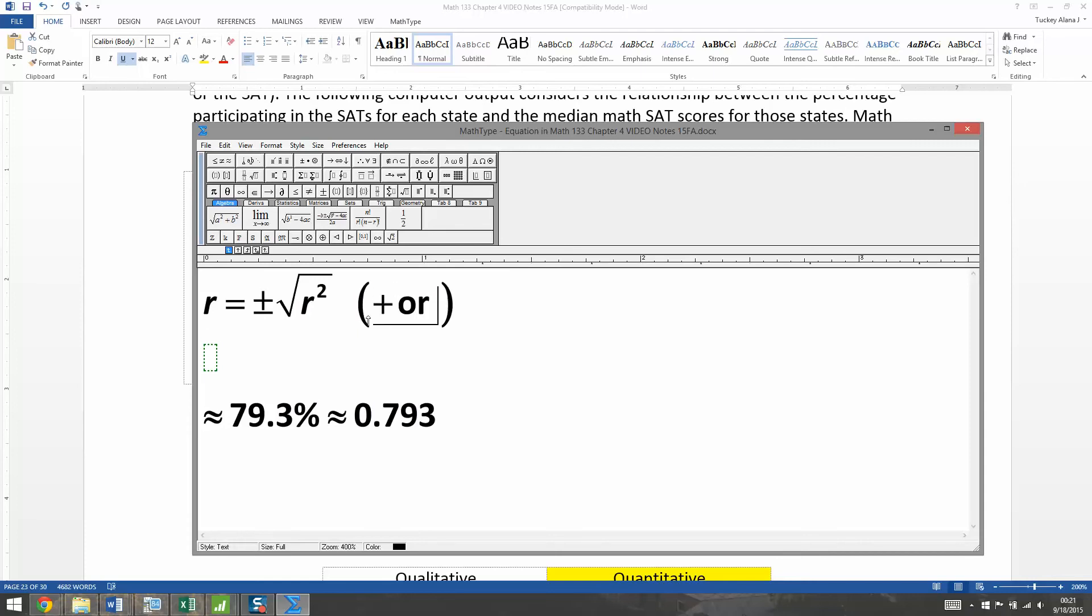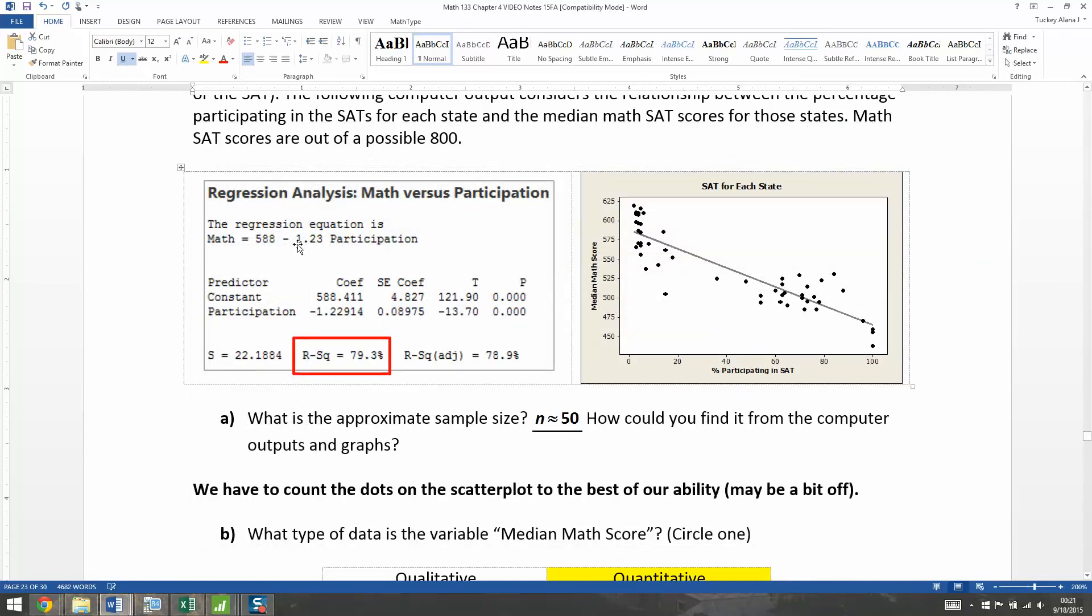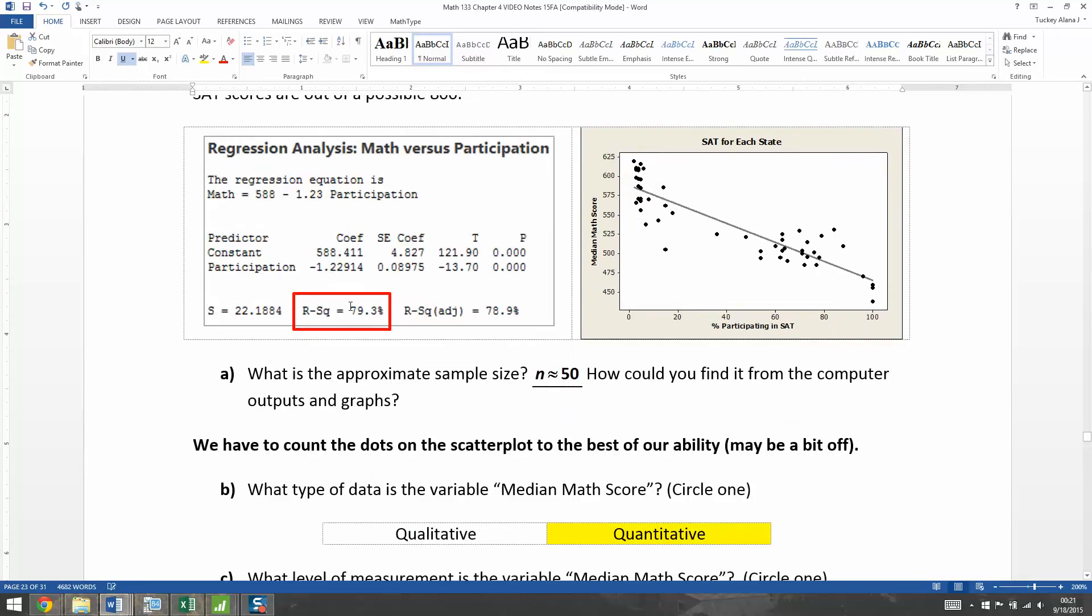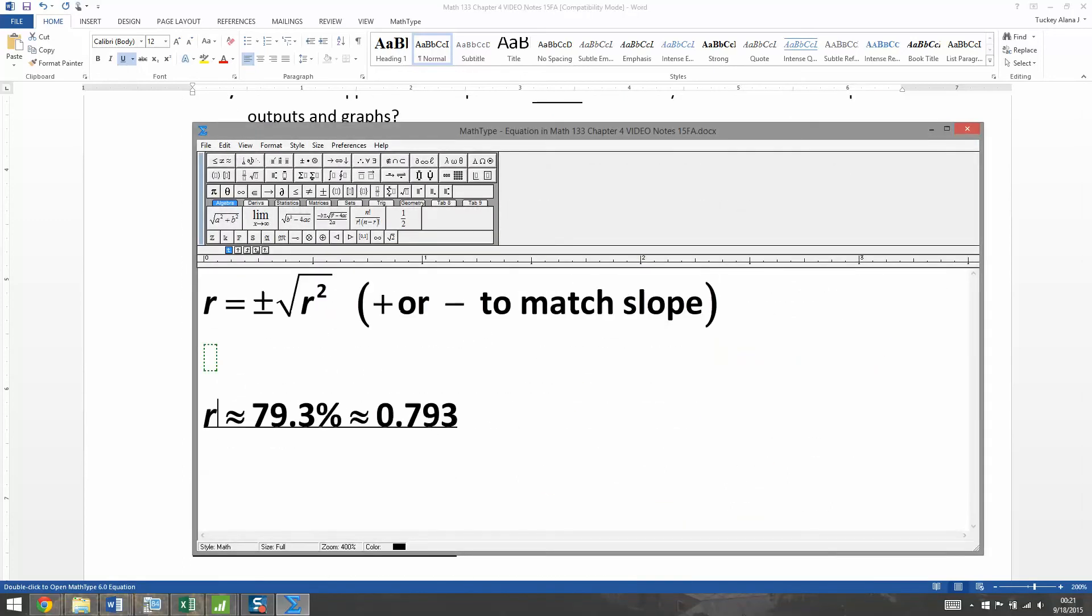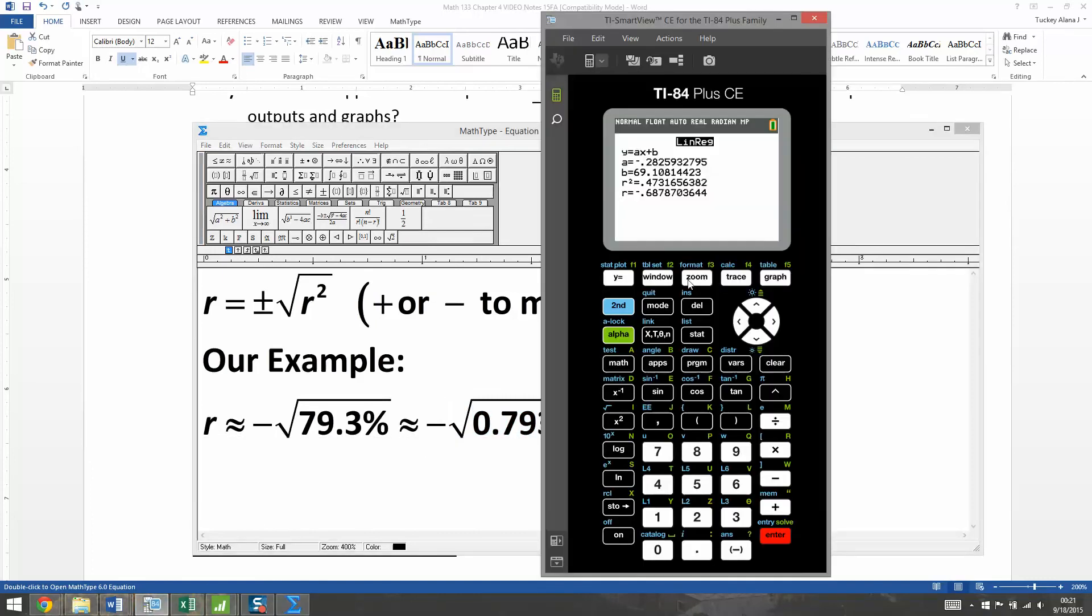Okay? So let me make that point. Plus or minus to match the slope. How about that? Okay, so you're going to make it positive if your slope is positive, make it negative if your slope is negative. In this case, our slope is negative, so we'll go with the negative one. So for our example, R is approximately the square root of 79.3%. But of course, nobody takes that. Oh, and it's negative at that. And we want the negative one. So we want negative the square root of 0.793. So I need a calculator because I do not know the square root of 0.793 off the top of my head. So second square root of 0.793, enter.